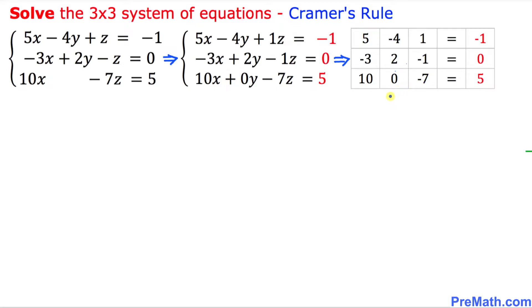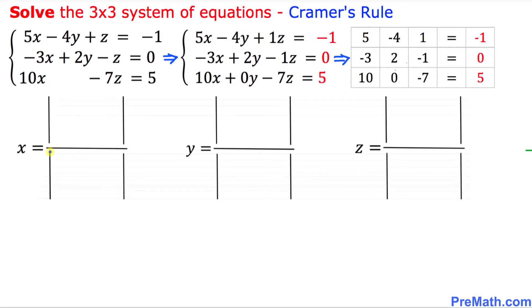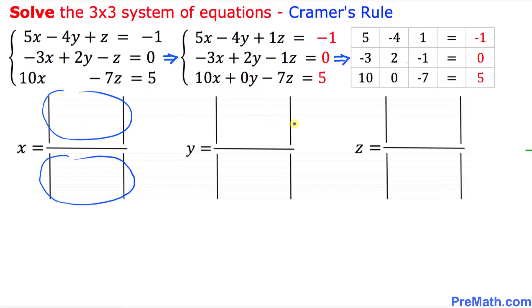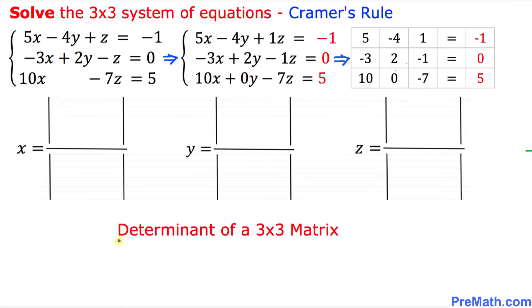The next step is to solve this system of equations — that means finding x, y, and z values. We set up these x, y, and z variables each with one box on the top and one box on the bottom, and these boxes are called the determinants of a 3-by-3 matrix.